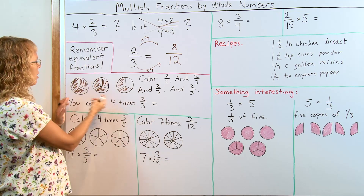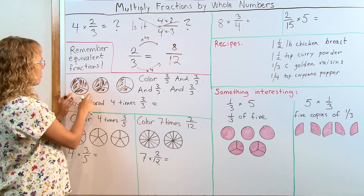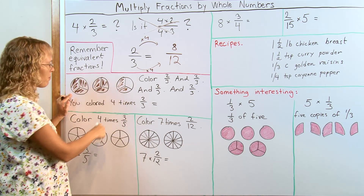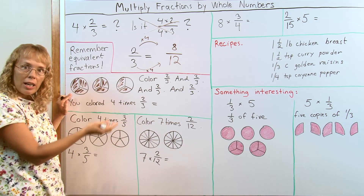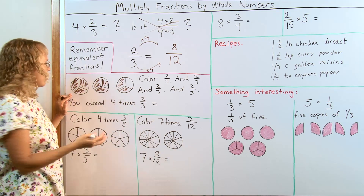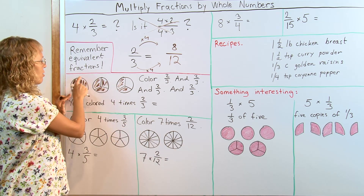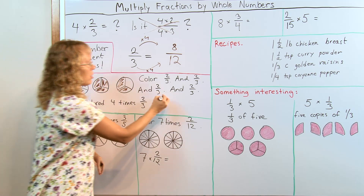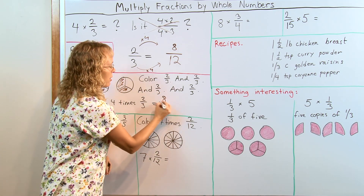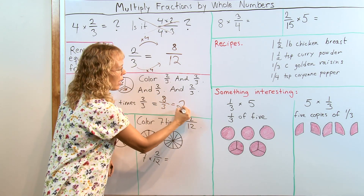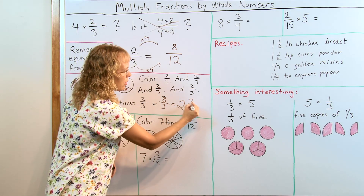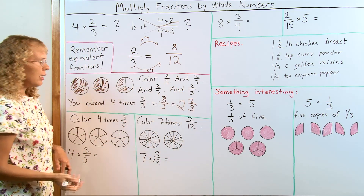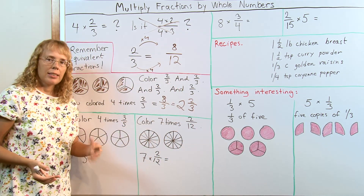How much did I color? I have 2 whole pies and 2 thirds. But I also have 8 thirds — you have 3 and 3 and 2 thirds. So it is 8 thirds, or 2 whole pies and 2 thirds.